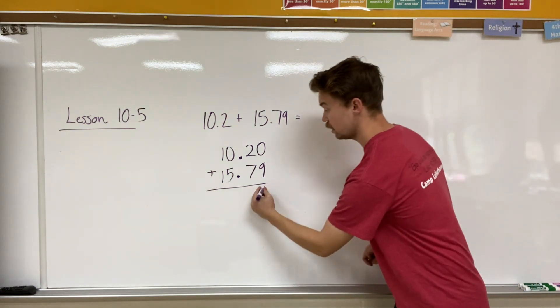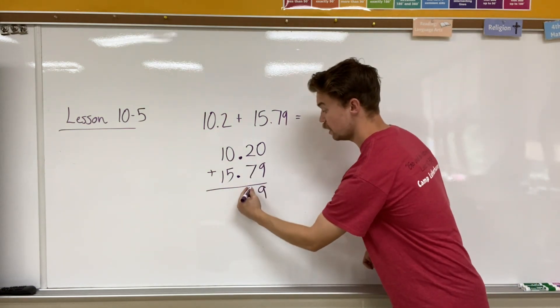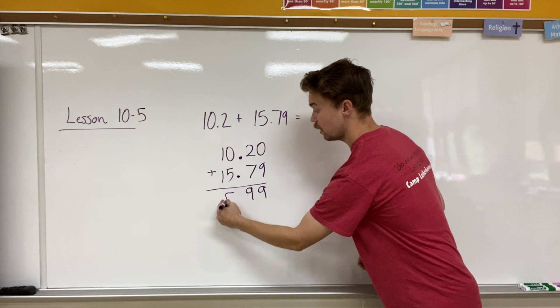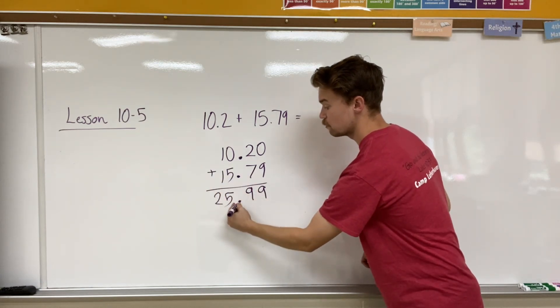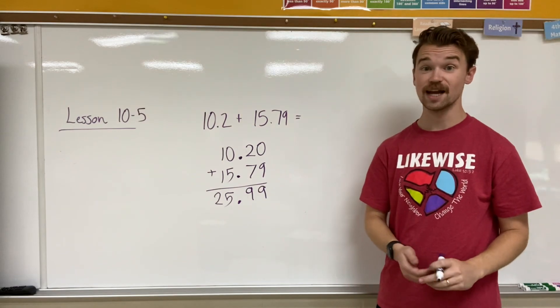Zero plus nine is nine, seven plus two is nine, zero plus five is five, one plus one is two, and make sure that my decimal place makes its way down. 25.99.